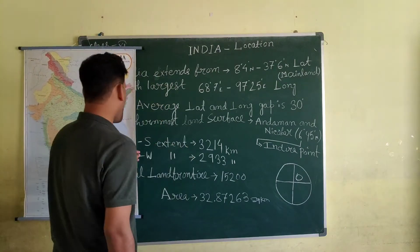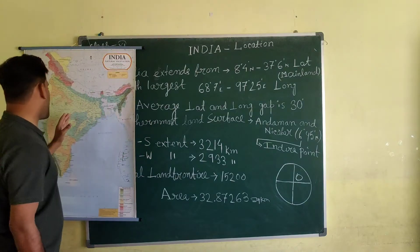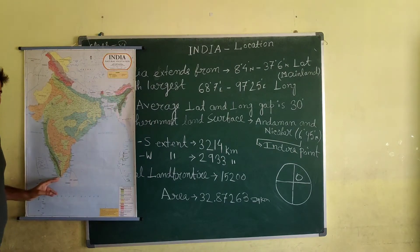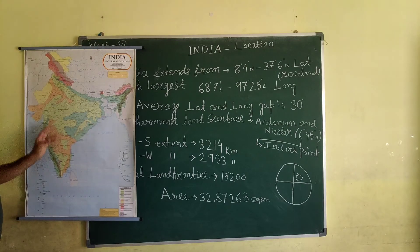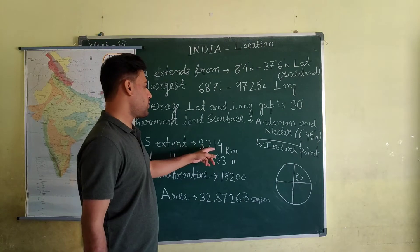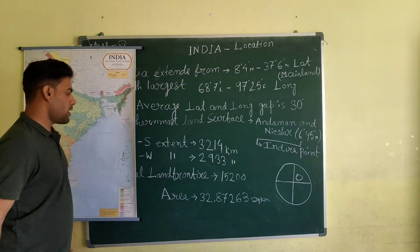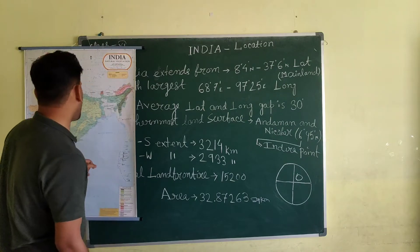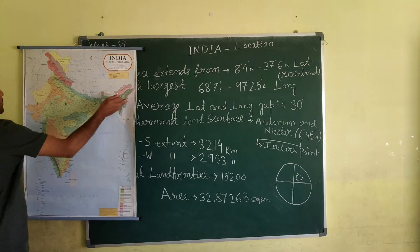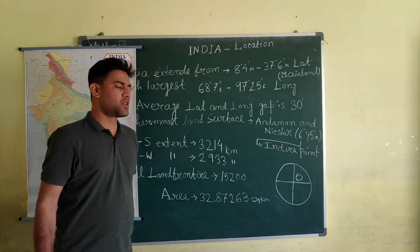From north to south, India's extension is about 3,214 km. From east to west, that is about 2,933 km, and in the mainland it is about 2,393 km from east to west.